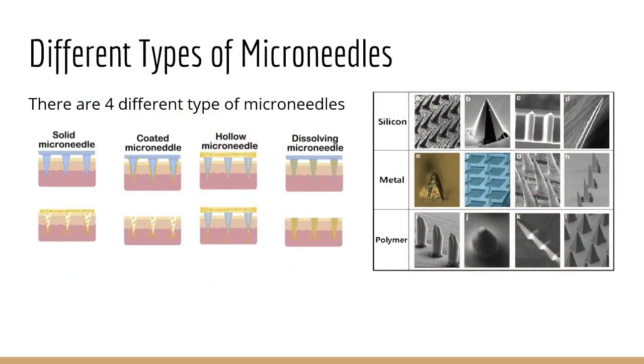There are four types of microneedles and they are solid microneedles, coated microneedles, hollow microneedles and dissolving microneedles. There are three materials used for manufacturing microneedles: silicon, metal and polymer. And microneedles have many benefits as it is quick, painless, impede needle phobia, no risk of bloodborne transmission of pathogens and allow self-application.